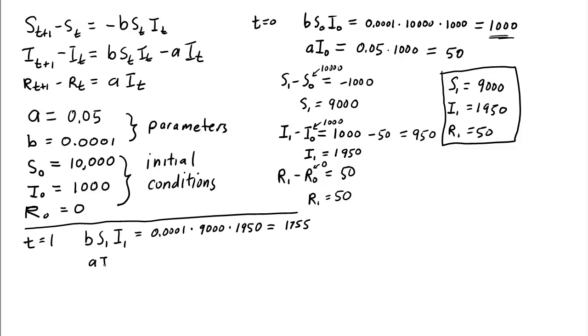How about infectives that recover or get removed or die, depending on what the disease is? Well, that's A, 0.05 times the number of infectives, 1,950. And that gives us 97.5. So we have 97 and a half individuals that are no longer infected.